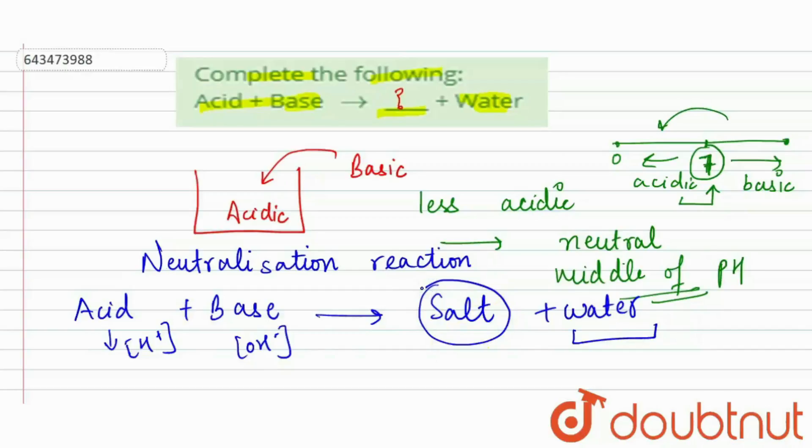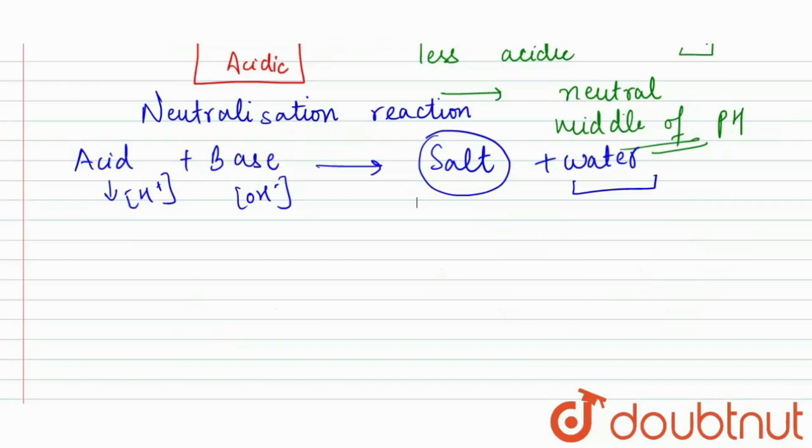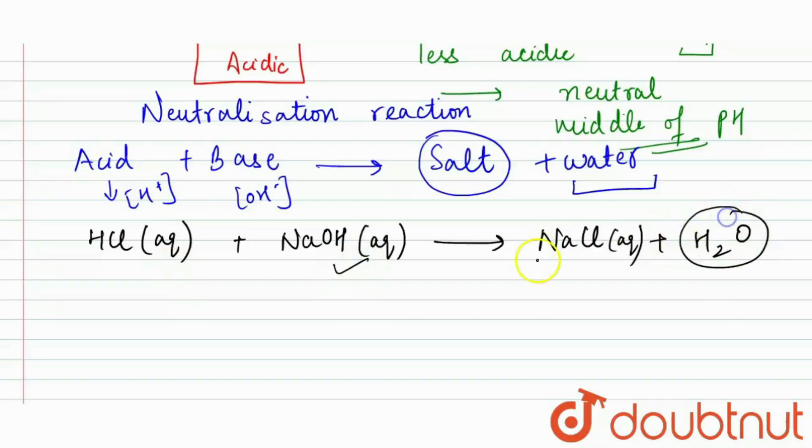Suppose we have an acid that is HCl, plus we have a base that is NaOH, sodium hydroxide. So now here what it will form? It will form NaCl and water. Here we can see that H positive and OH negative ions form water, and here we have a salt that is NaCl.